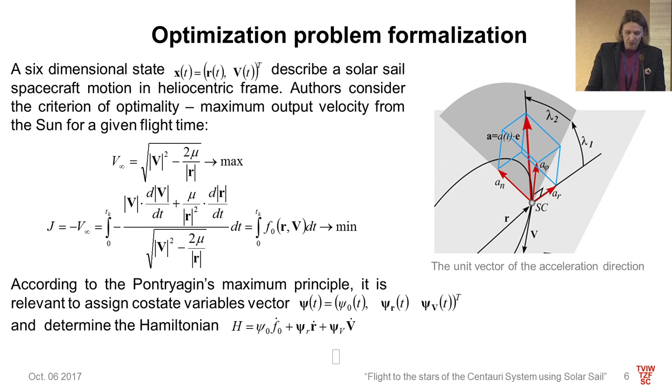In this paper, we will consider the problem of the Alpha Centauri system reaching for minimal time by the solar sail spacecraft, taking into account effects of space-time curvature and special relativistic kinematics. At the initial time, the spacecraft is on the heliocentric orbit of the Earth and moves with its velocity. At the finish time, the spacecraft should be in the vicinity of the barycenter of Alpha Centauri system. A six-dimensional state vector describes a solar sail spacecraft motion in heliocentric frame.